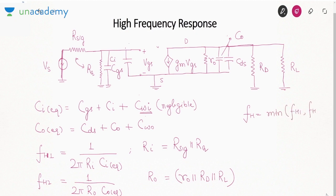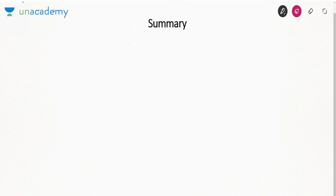Once we have the two cutoff frequencies, the overall upper cutoff frequency is the minimum of FH1 and FH2. So Miller's theorem that we studied for BJT will also be used in JFET to resolve the gate-to-drain capacitance CGD into two capacitances — one at the input and one at the output.